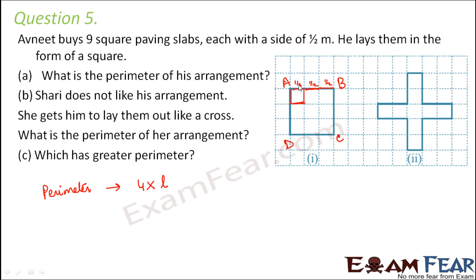So the length of each side is half plus half plus half. So the length of AB is half plus half plus half which is equal to 3 by 2. So 3 by 2 meters is the length of each side.